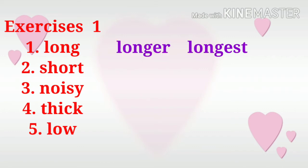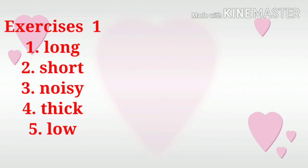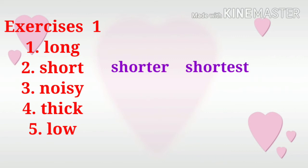Number one: long. The comparative degree of long is longer — we add ER at the end of the word. Then the superlative degree of long is longest — we add EST to the word. Number two: short. The comparative degree of short is shorter, and the superlative degree of short is shortest. We add EST to make it in the superlative degree.